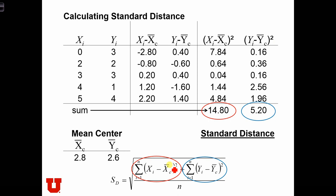So now we have everything we need to calculate the standard distance. We put 14.8 into that location as the sum of the deviances in the x dimension, and we have 5.2 as the sum of the squared deviances in the y direction. So SD is equal to the square root of 14.8 plus 5.2 all over 5.